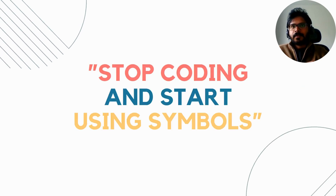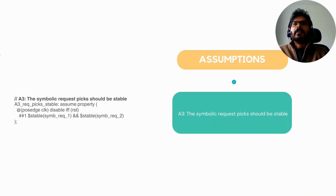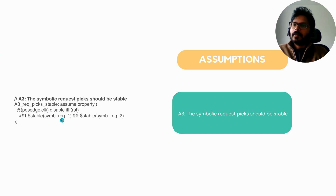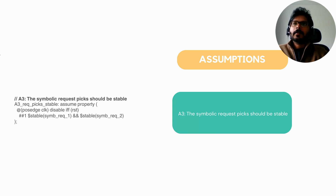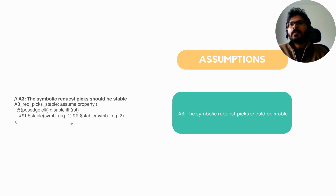Why create so many properties when you can use symbolic variables instead? Let's discuss verifying the same fixed priority arbiter using symbolic variables. Two symbolic variables are introduced: `symbolic_request_one` and `symbolic_request_two`. Each can take any value from zero to n, representing any requester index. The key is that the symbolic variable stays stable within a particular run — in a given run, `symbolic_request_one` might take value zero and `symbolic_request_two` might take value two.